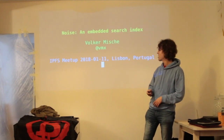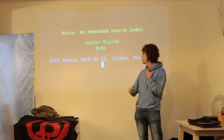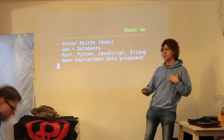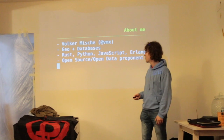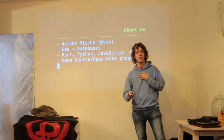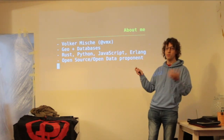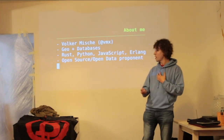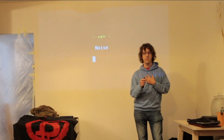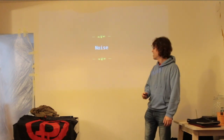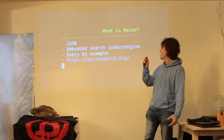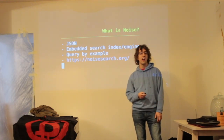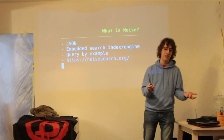So let's get started. It's about Noise — it's an embedded search index. As I'm new to this community, my background is from Geo and databases mostly, and I code in Rust, Python, JavaScript, and Erlang. I spent the past seven years coding Erlang. And I love open source. So, Noise — it is an indexing engine, and it's heavily based around Chazon. It does indexing things: you can search things, put them in, get them out.